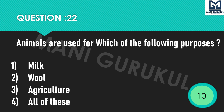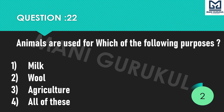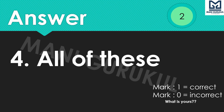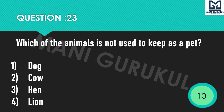Question 22: Animals are used for which of the following purposes? Options: 1st Milk, 2nd Wool, 3rd Agriculture, 4th All of these. Time's up. Answer is 4th: All of these.